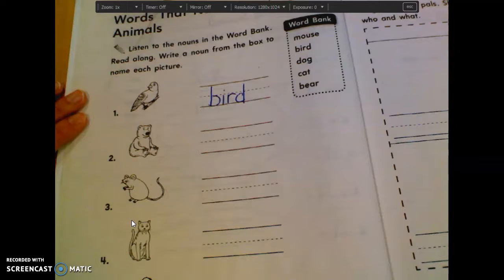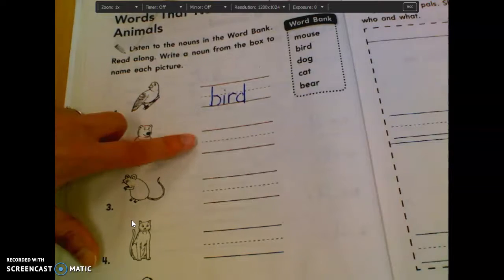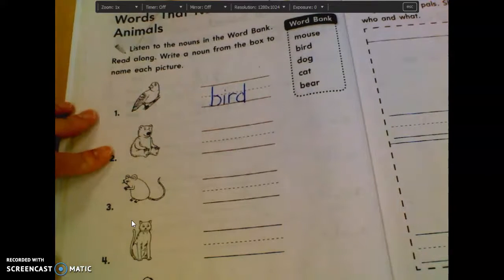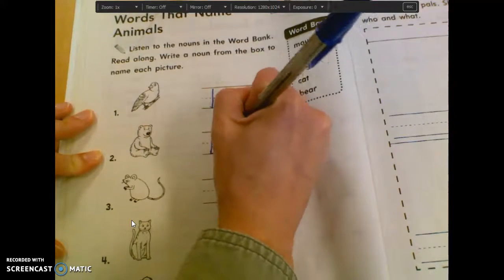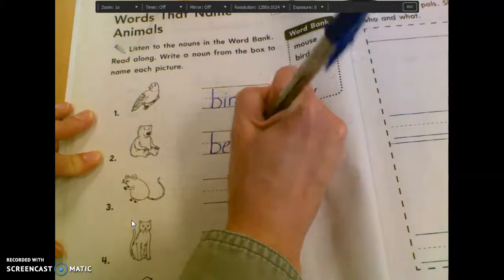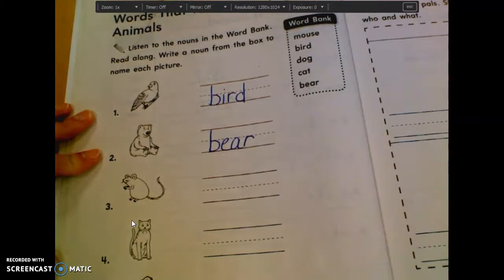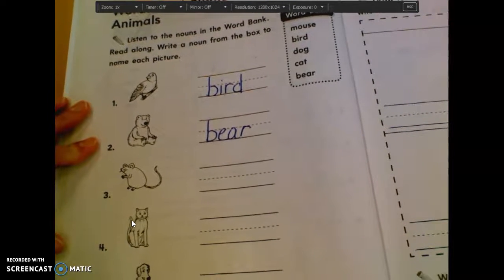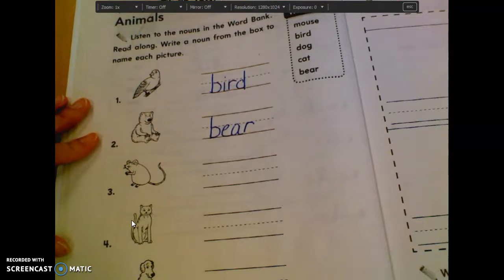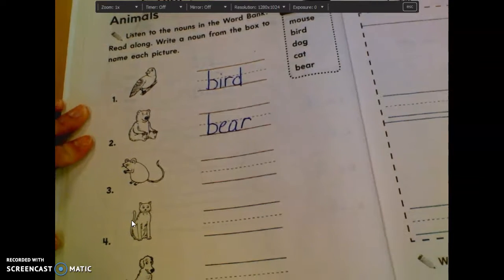All right. So you're going to write bird on the line, on the first line. What is picture number two? Ivana. Bear. Picture number two is bear. Bear is B-E-A-R.